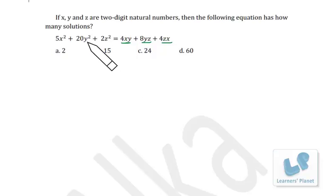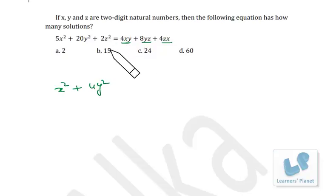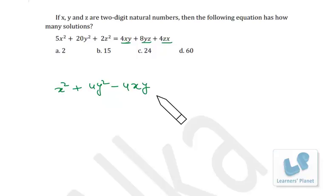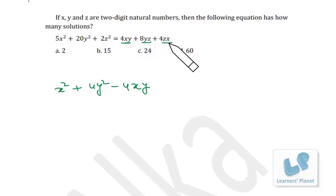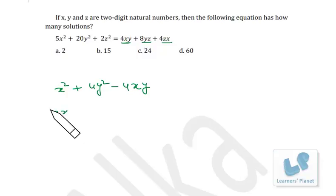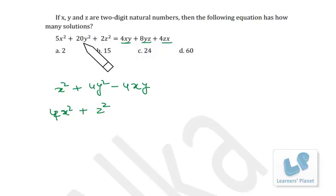Since the coefficient of Y² seems large, I take one X² and four Y² and combine them to get (X − 2Y)². Then for the Z terms, I take one Z² and the 4ZX term with one X², leaving me with 4X², so I form (2X − Z)².